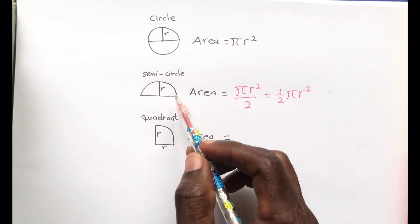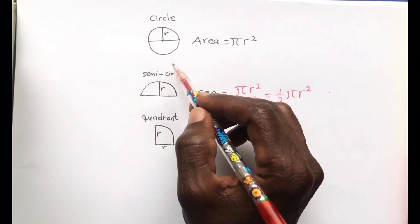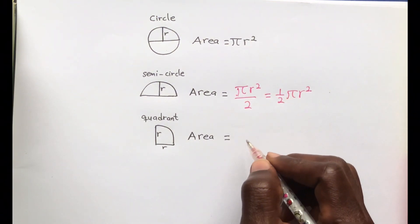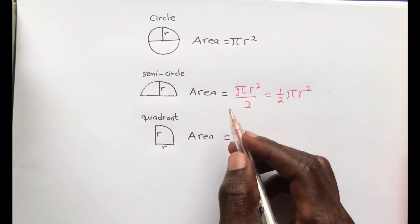a quadrant is when you divide a whole circle into 4 equal parts and then you take 1. That is a quadrant. So for a quadrant, you divide the area of the circle by 4,